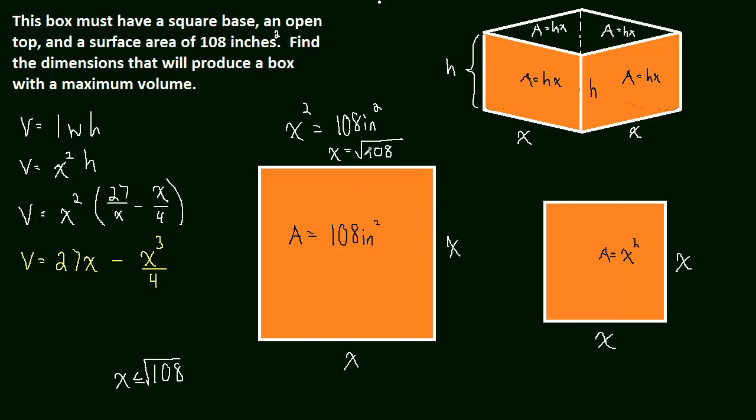We're talking about the domain. We said that the most x could ever be is the square root of 108 because that will make the surface area of the base 108 inches squared. If we make x any bigger, the surface area of the base will be more than 108 inches squared. The least x could ever be is 0, right? x can't be a negative number. So if x is 0, there is no base and everything goes to height.